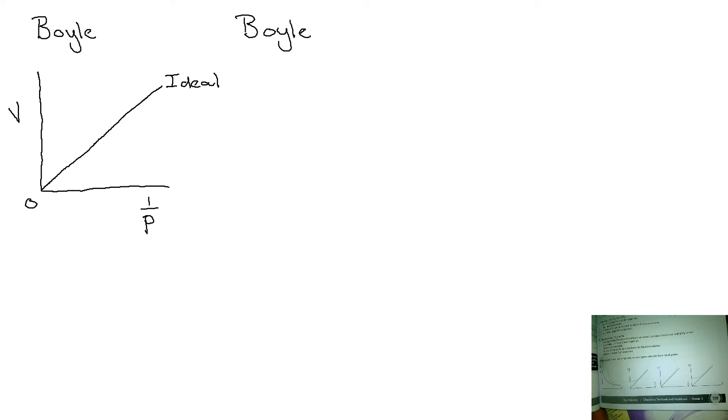So this is the line for the ideal gas. Now, we know that a real gas deviates at high pressure. So if pressure is very high, what is the inverse of pressure? It is very low. So the deviation will take place here, where we have low inverse of pressure values.